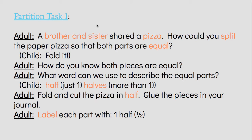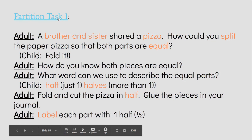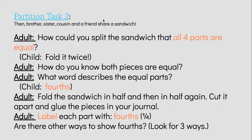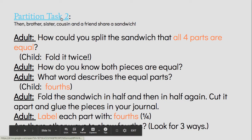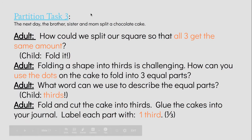Here's the first task. If you have an adult available, you can have them read it to you. If not, you can click right there and someone else will read it to you. When you're done with that, you're going to go to task two — again, click here if you need it read to you. And then you're going to move on to task three.